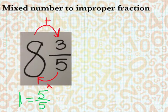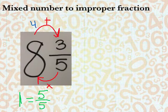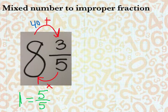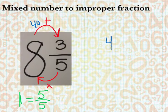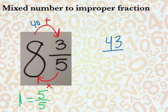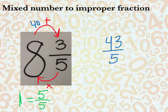Make a little note right here. 40. And then we're going to do that plus our top. So, 40 plus 3 is 43. And then we keep it over the same number.